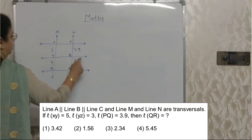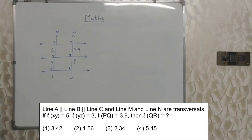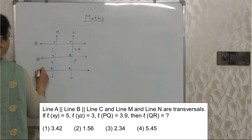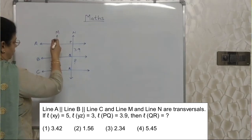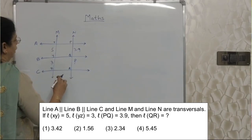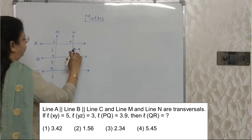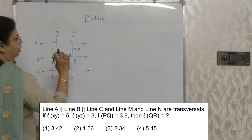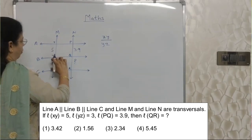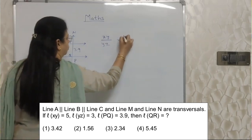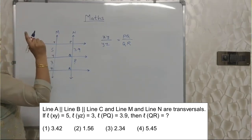These are parallel lines and transversals are M and N. This is line A, this is B and this is C. Whenever parallel lines intercept with these transversals, those portions are called intercepts. And they are in proportion with the intercepts of other transversals. Length of XY upon length of YZ will be equal to PQ upon QR. If you don't know this, you won't be able to go ahead with this sum. So this is a very very important concept.